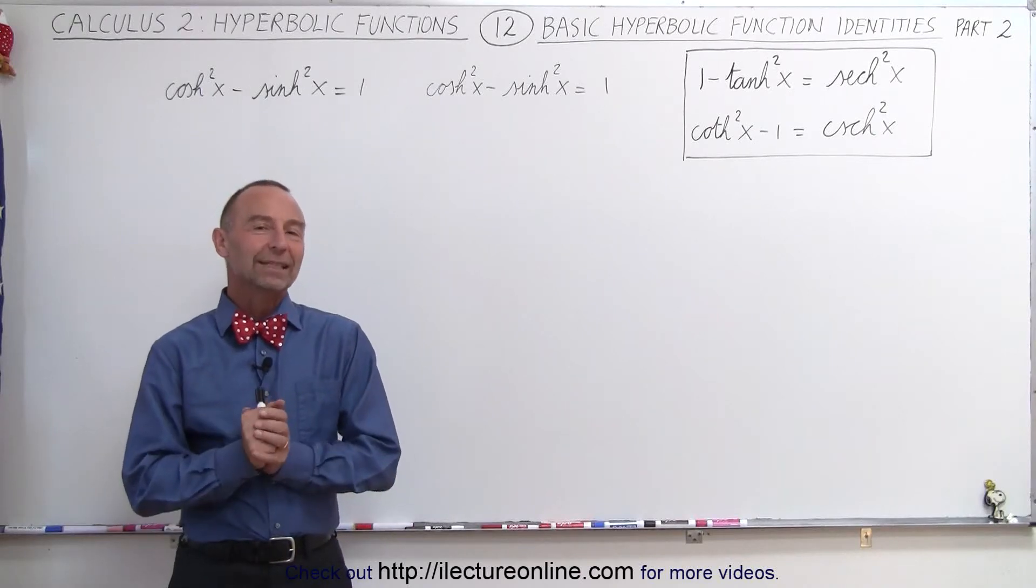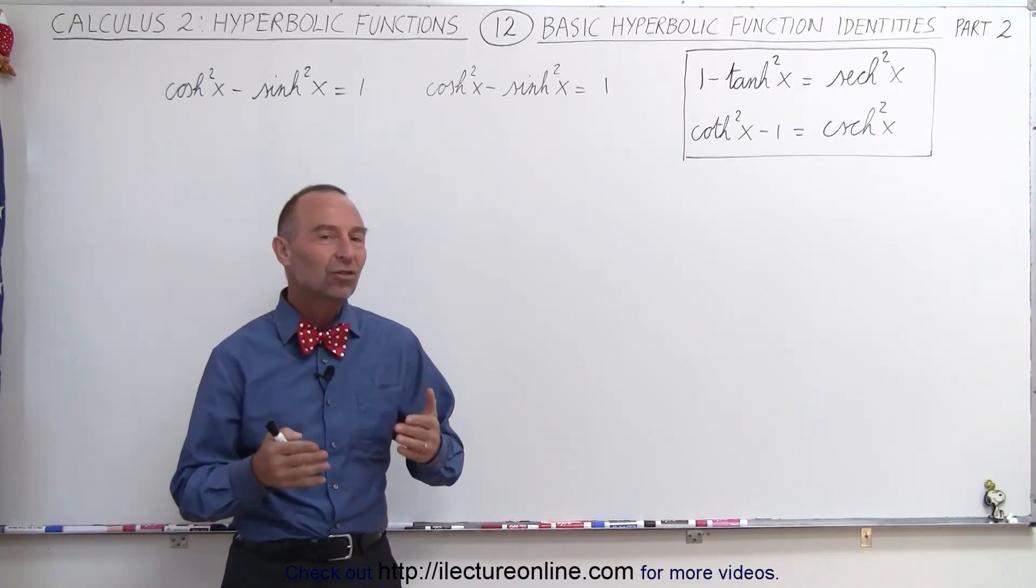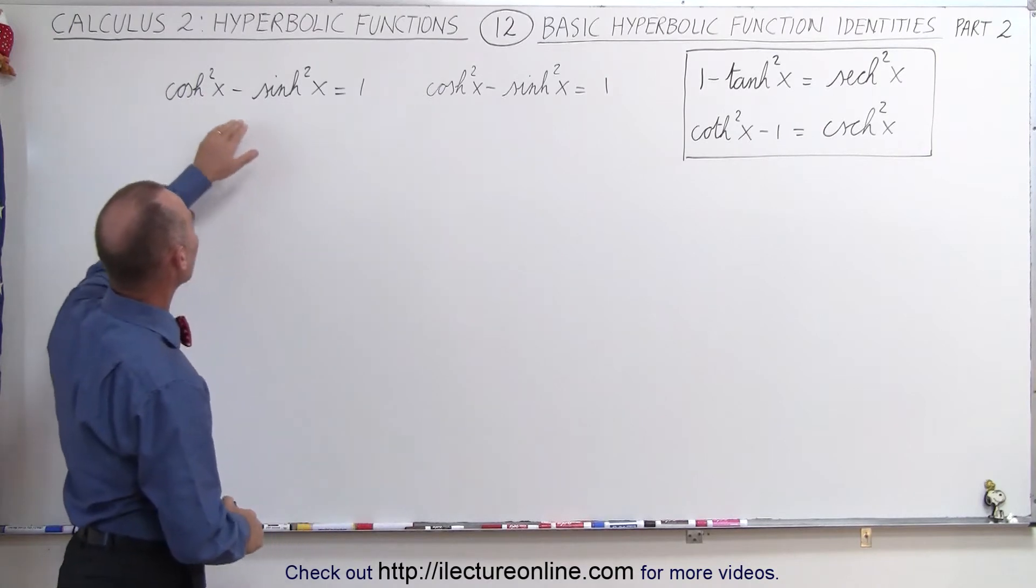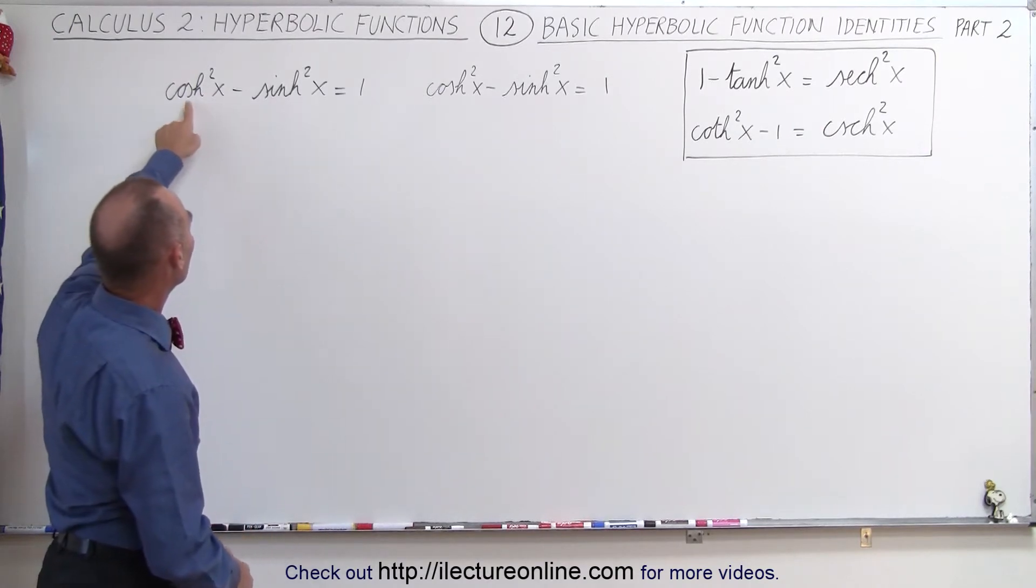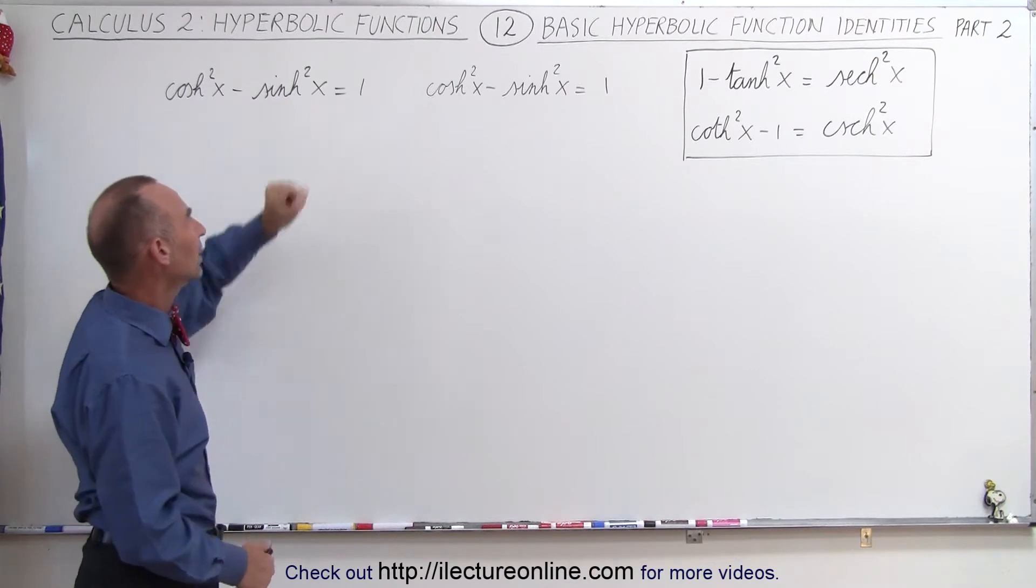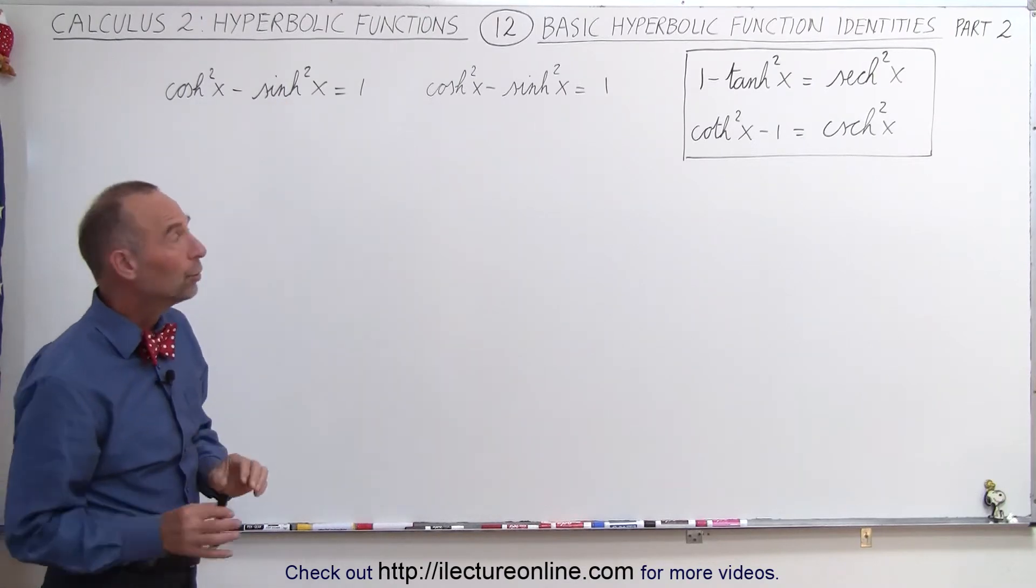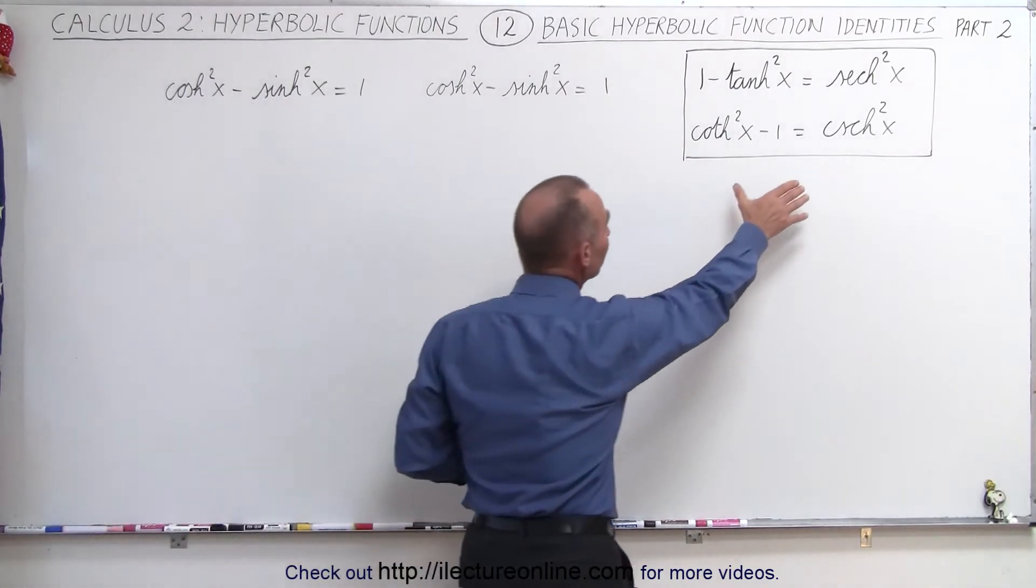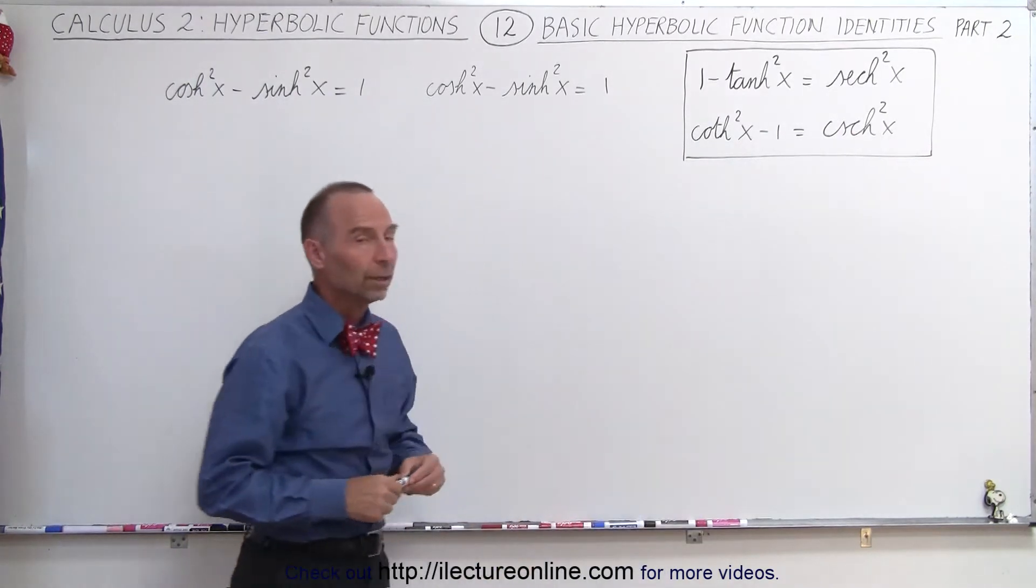Welcome to ElectronLine. The next couple of identities start with our basic identity we saw in the previous video, that the hyperbolic cosine squared of x minus the hyperbolic sine squared of x equals 1. What we're going to do now is show that these two identities are indeed true as well.